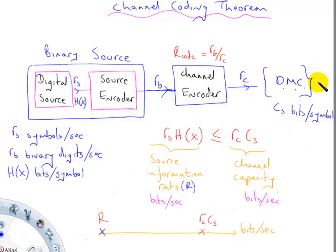You can make the probability of an error at your sync to be as low as you wish, and if this is not true, if big R is greater than this channel capacity, then information cannot be transferred across the channel error-free.